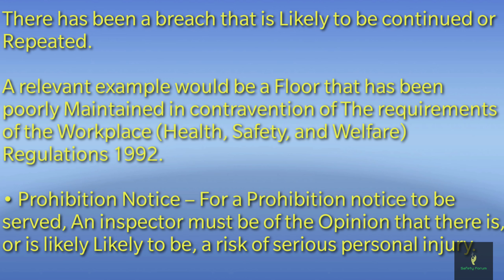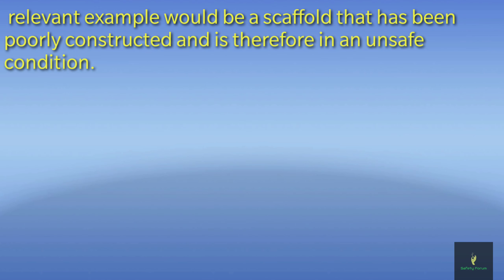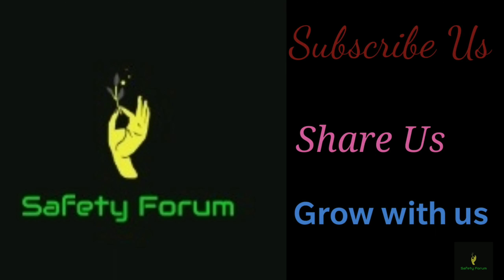For a prohibition notice to be served, an inspector must be of the opinion that there is, or is likely to be, a risk of serious personal injury. A relevant example would be scaffolding that has been poorly constructed and is therefore in an unsafe condition.